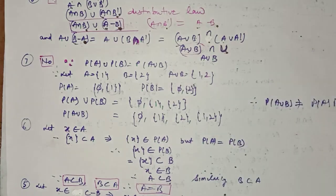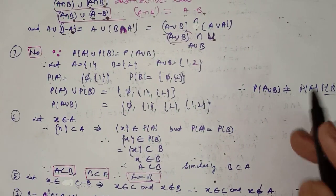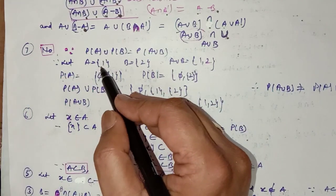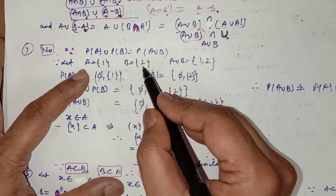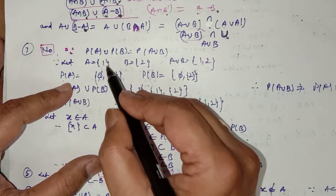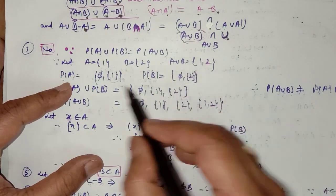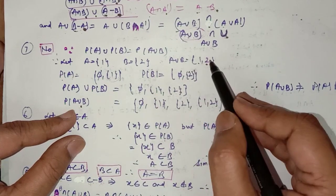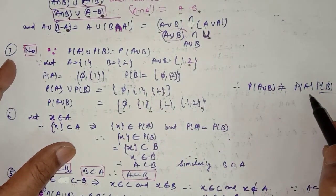In question number 7, is it true that P(A)∪P(B) = P(A∪B)? No, it is not true. Prove by counterexample: let A = {1}, B = {2}, so A∪B = {1, 2}. Then P(A) = {∅, {1}}, P(B) = {∅, {2}}, and P(A)∪P(B) = {∅, {1}, {2}}. But P(A∪B) = {∅, {1}, {2}, {1,2}} — they are not equal. So P(A∪B) ≠ P(A)∪P(B).